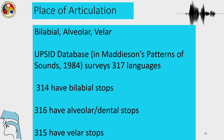Among all these categories, the distinctions among the sounds which are most common in languages are the bilabial, alveolar and velar place of articulation. In Maddieson's Patterns of Sounds, in a survey of 317 languages, there are 314 bilabial stops, 316 alveolar/dental stops, and 315 velar stops.